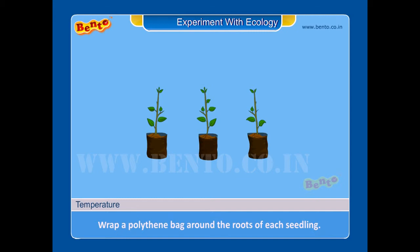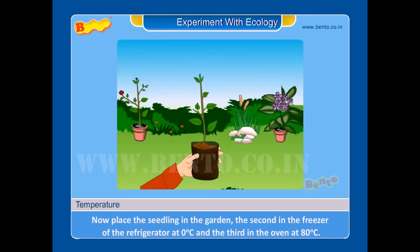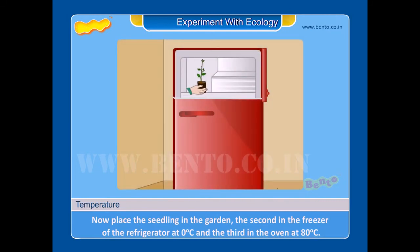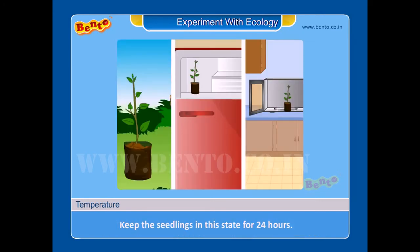Step 3: Place the first seedling in the garden, the second in the freezer of the refrigerator at 0 degree Celsius, and the third in the oven at 80 degree Celsius. Step 4: Keep the seedlings in this state for 24 hours.